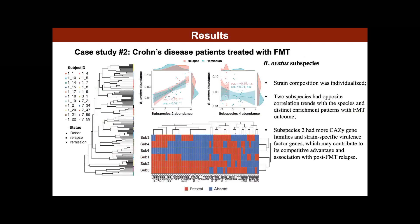In case study number two, we applied StringPanda to a dataset from Crohn's disease patients treated with FMT. We found strong individual signatures using predicted subspecies compositional profiles. We also identified two Biovata subspecies that had opposite association trends with Biovata species and distinct enrichment patterns with FMT outcome. Notably, subspecies two had more quasi-gene families and string-specific virulence factor genes, which may contribute to its competitive advantages and association with post-FMT relapse.